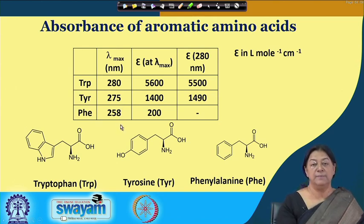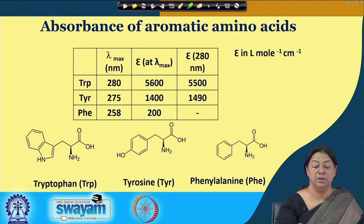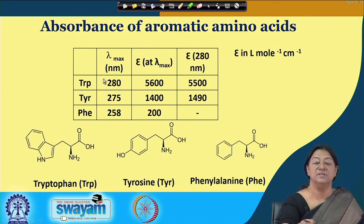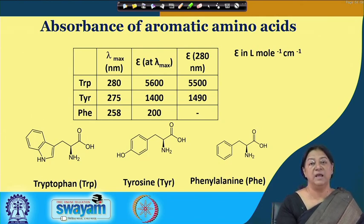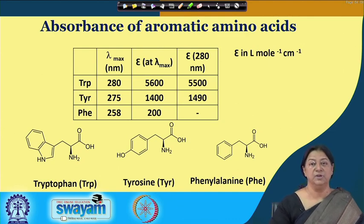Going a step further: when we shine light on the molecule at around 280 nanometers, 275 nanometers, and 258 nanometers, these specific aromatic amino acid residues are going to be excited and will show an absorbance. Since these specific amino acids are already present in a protein, the protein having phenylalanine, tyrosine, and tryptophan will give a specific absorbance.